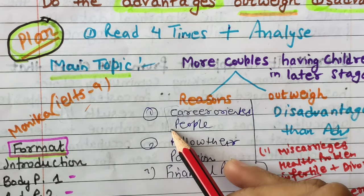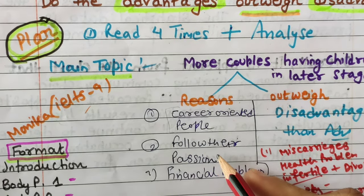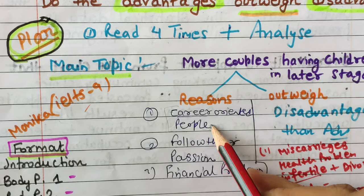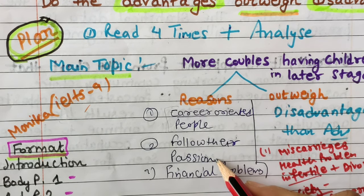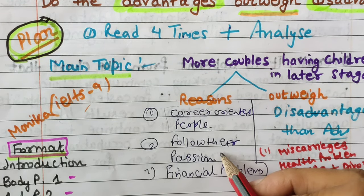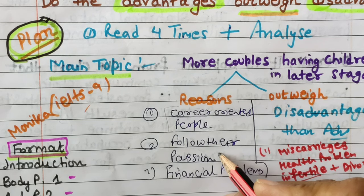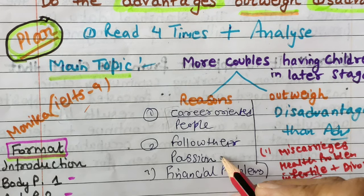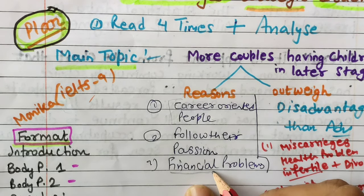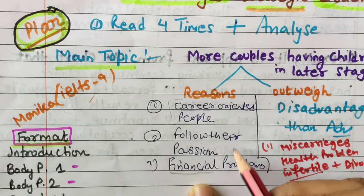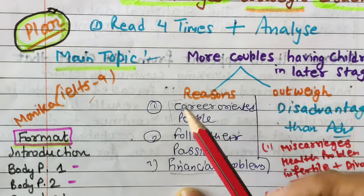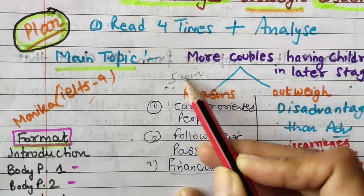The second reason is that people follow their passion — traveling throughout the world, arts and culture, and many other things. Third, some couples may have financial problems. These three points — career-oriented lifestyle, following passion, and financial problems — are the key reasons I've thought of before writing. The first five minutes of your exam should be spent on planning like this.